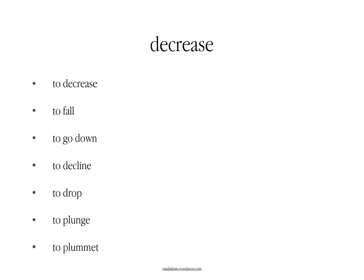If you mean to say the opposite — that the number or amount has gone down — you could use a verb such as 'decrease,' 'fall,' 'go down,' 'decline,' 'drop' — the figure of whatever has dropped. Or 'to plunge' — again, like 'rocket' or 'skyrocket,' to plunge is a fall which is very dramatic, very sudden. Or 'to plummet,' which is something very similar.